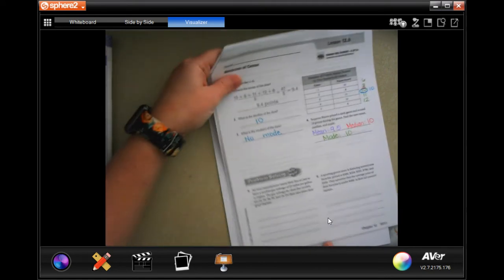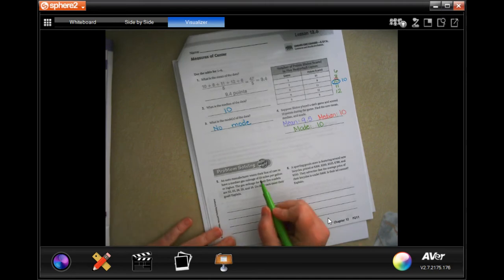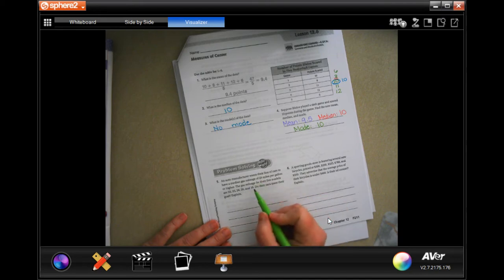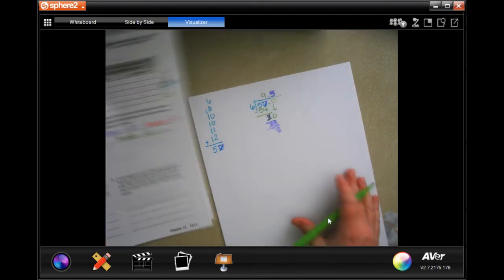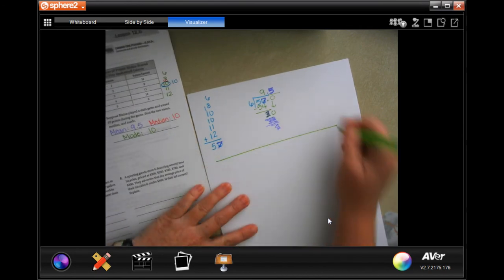An auto manufacturer wants their line of cars to have a median gas mileage of 25 miles per hour or higher. The gas mileage for their 5 models is 23, 25, 26, 29, and 19. Do their cars meet their goals? Explain. Let's just draw a line.